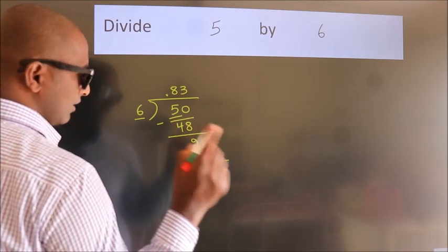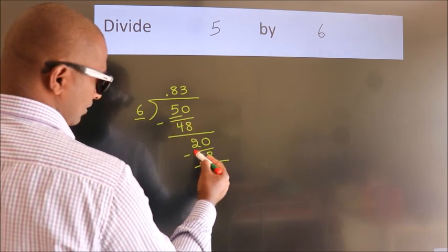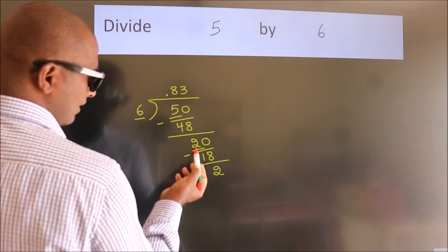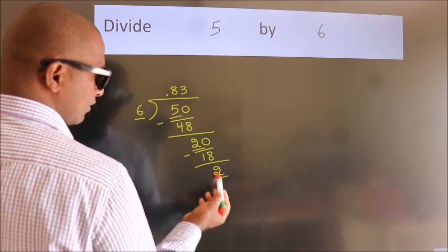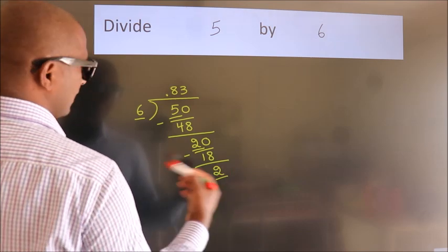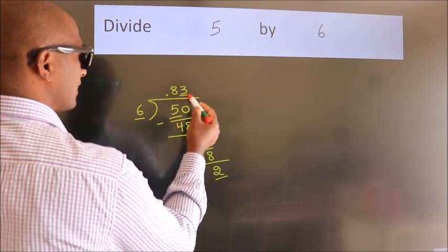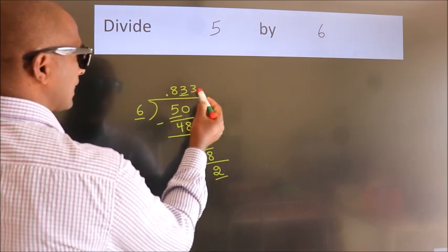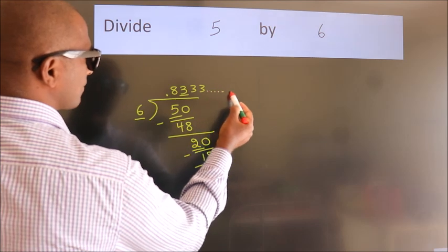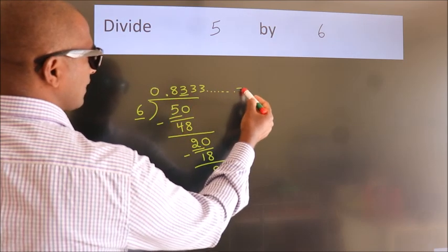Now you observe. We had 2 here, and we got 2 again. That means this number keeps on repeating. So this is our quotient.